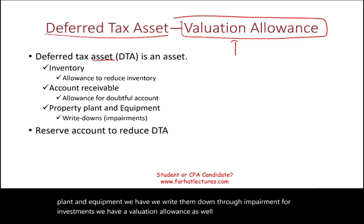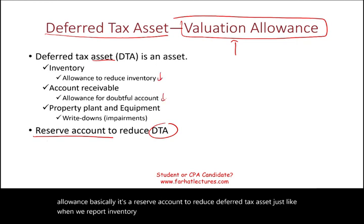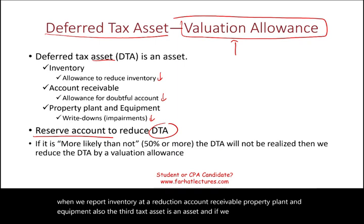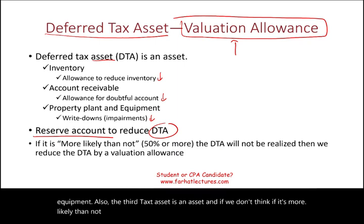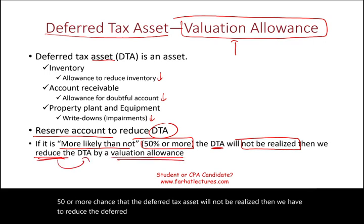So what is a valuation allowance? Basically, it's a reserve account to reduce deferred tax asset, just like when we report inventory, accounts receivable, and property, plant and equipment. Deferred tax asset is an asset, and if it's more likely than not — meaning a 50% or more chance — that the deferred tax asset will not be realized, then we have to reduce the deferred tax asset by the valuation allowance.